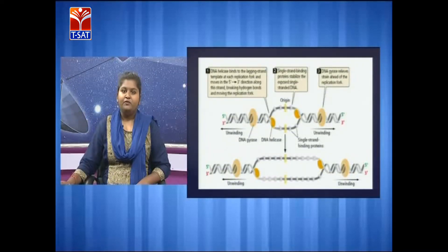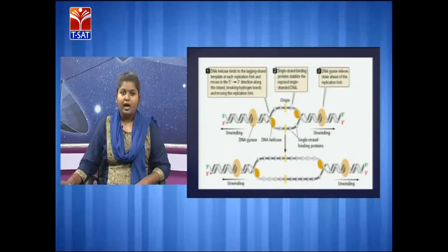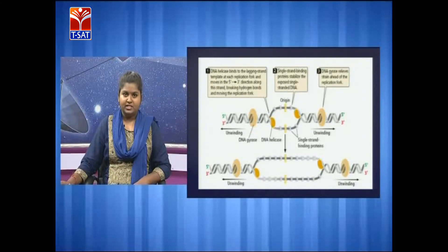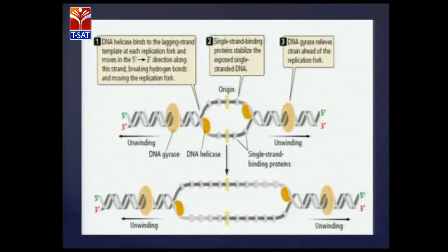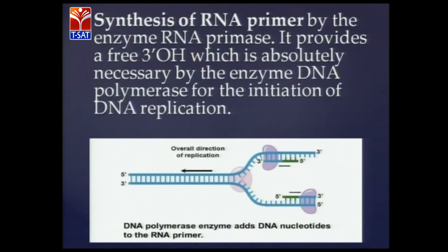The next step is the formation of the replication fork. The enzyme helicase attaches to the origin site and melts the DNA, releasing two separate strands. These separate strands are bound by single-strand stabilization proteins, which prevent re-annealing. Due to the melting of DNA, torsion is created in the DNA, which is relieved with the help of topoisomerases. At the origin, two replication forks are formed in a Y-shape, and since there are two replication forks, synthesis occurs in two directions — hence it is a bidirectional replication. The next step is synthesis of the RNA primer, done by the enzyme RNA primase, providing the free 3' OH group to which new nucleotides will be added.